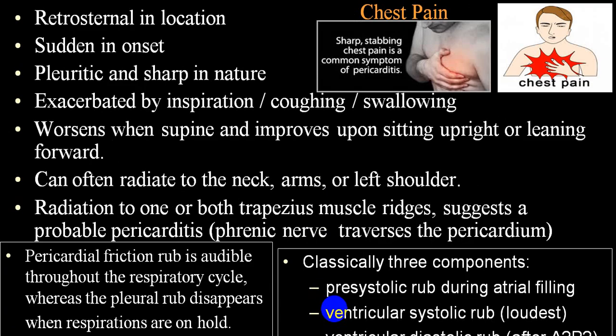The retrosternal chest pain is sudden in onset, pleuritic in nature — sharp, pricking, or stabbing — increased by inspiration, coughing, or swallowing. It is worsened in the supine posture and improves by sitting upright and leaning forward. Can radiate to the neck or left shoulder; radiation is to both trapezius muscles if the phrenic nerve is involved or irritated, and person can also have cough.